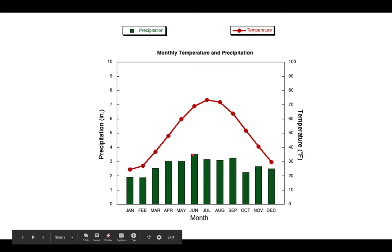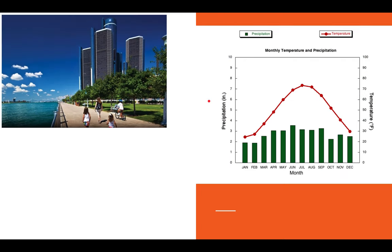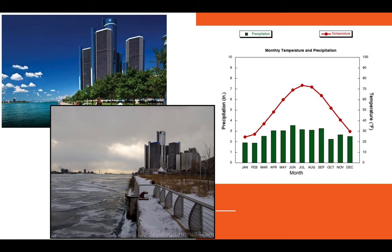And then here we have a decent amount of rain in the summers, about three inches, and warm temperatures. So we have warm, humid summers. We have cold, snowy winters. So that's a typical Midwest climate like Detroit, Michigan.